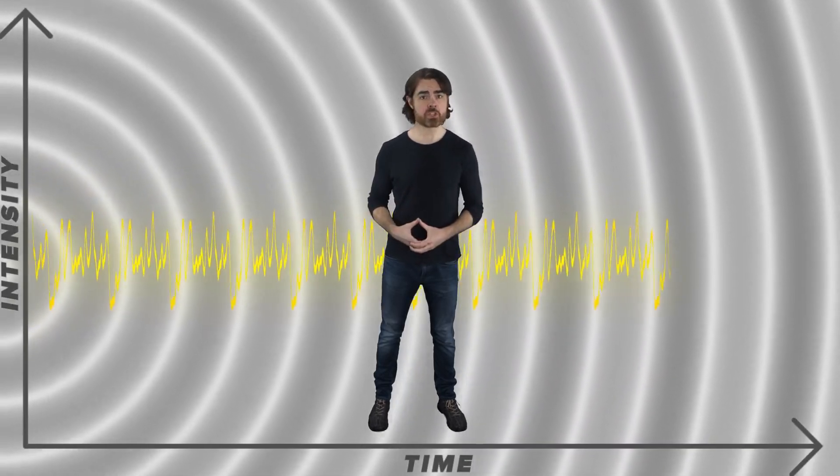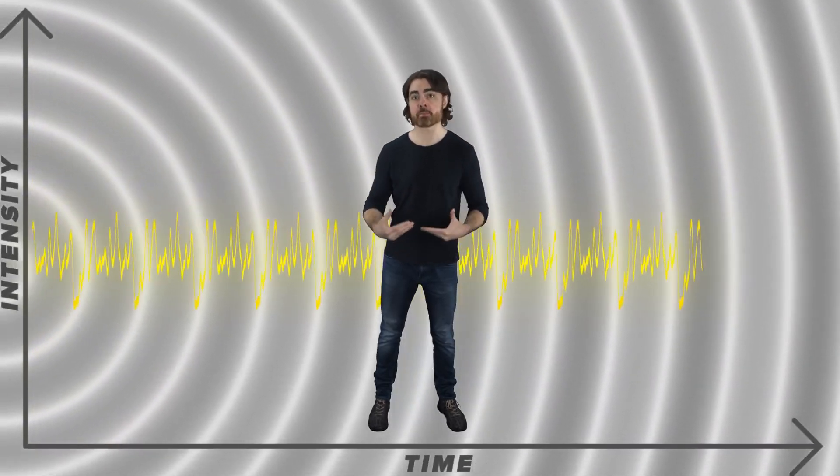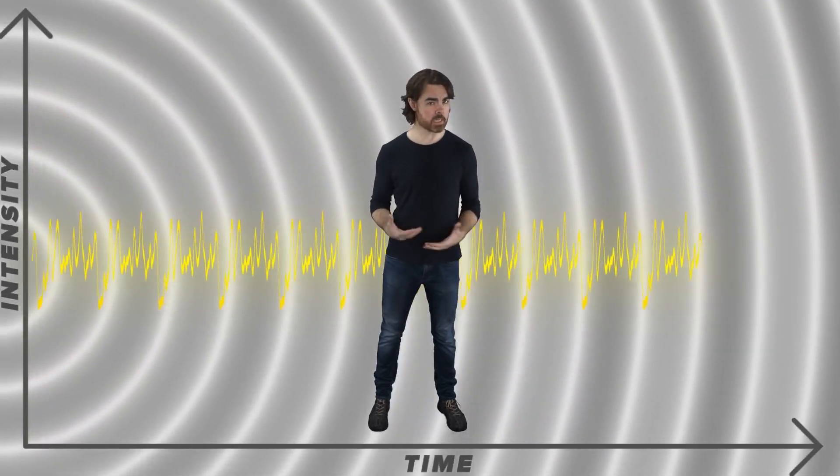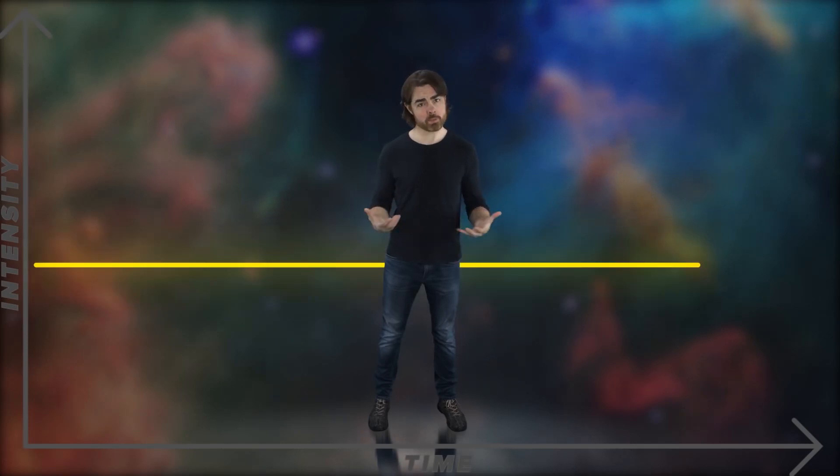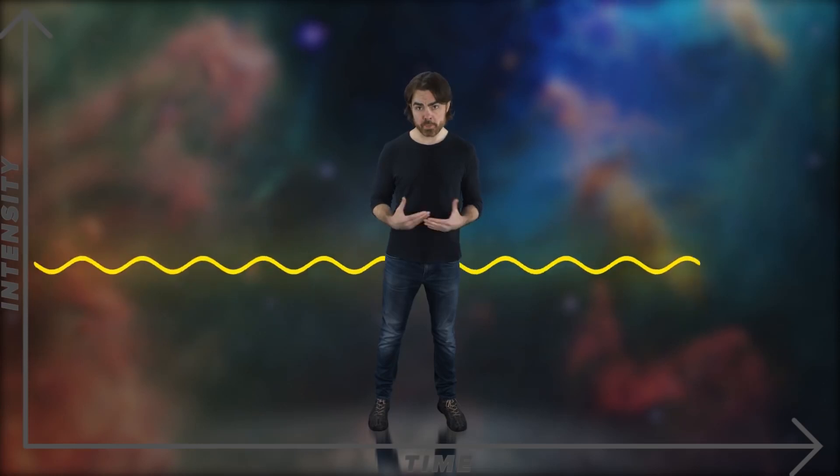You can describe a sound wave just as the intensity of the wave as it passes by, so intensity changing over time. It can take really any shape. That shape determines what the wave sounds like to our ears. The sound wave for a simple pure tone, like a middle C, is a sinusoidal wave with the frequency determining the pitch of the tone.